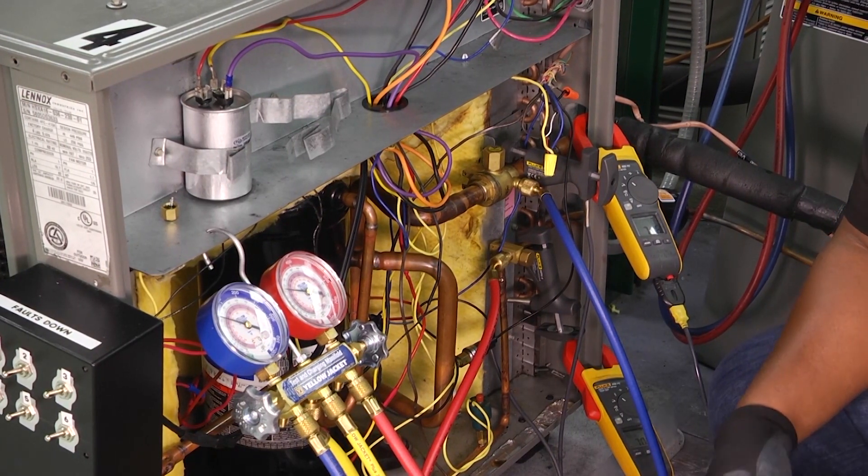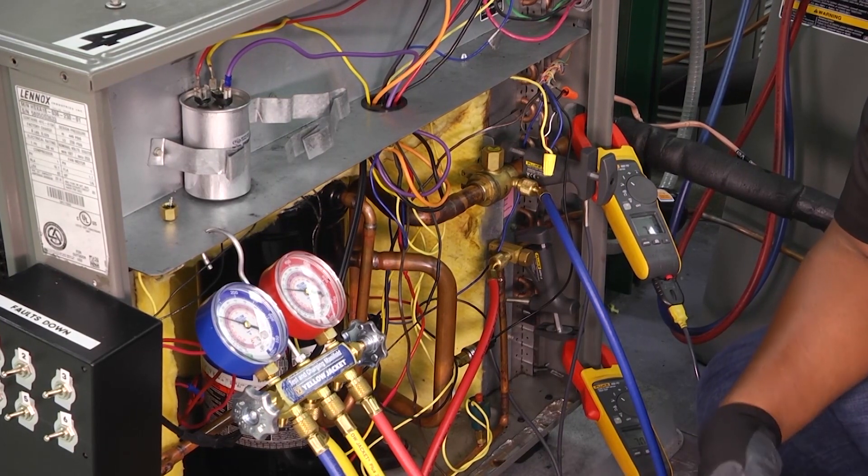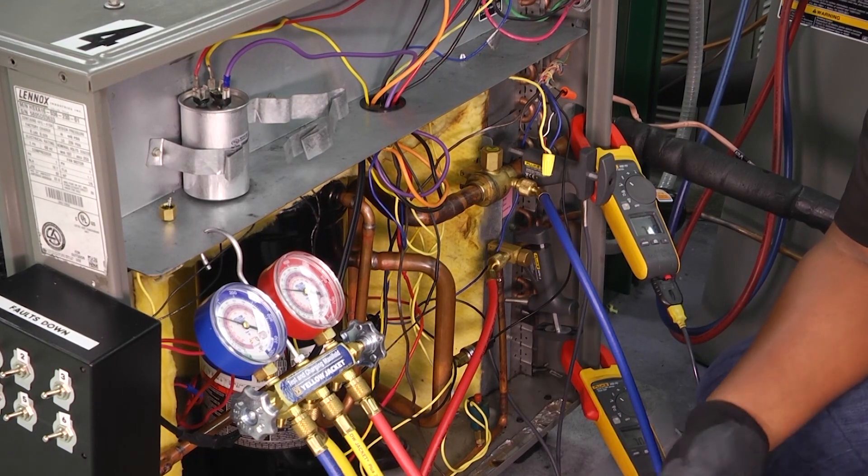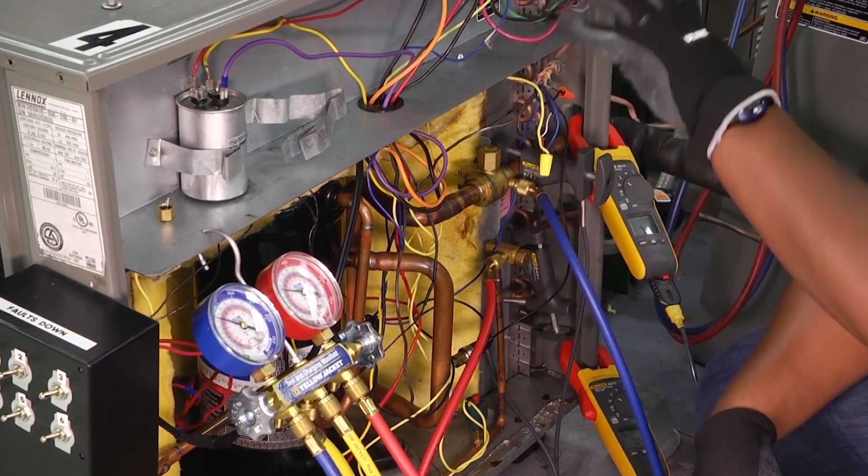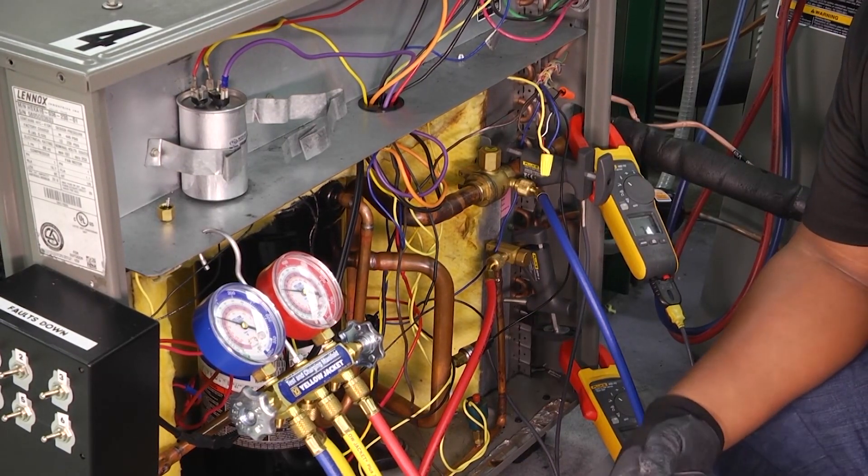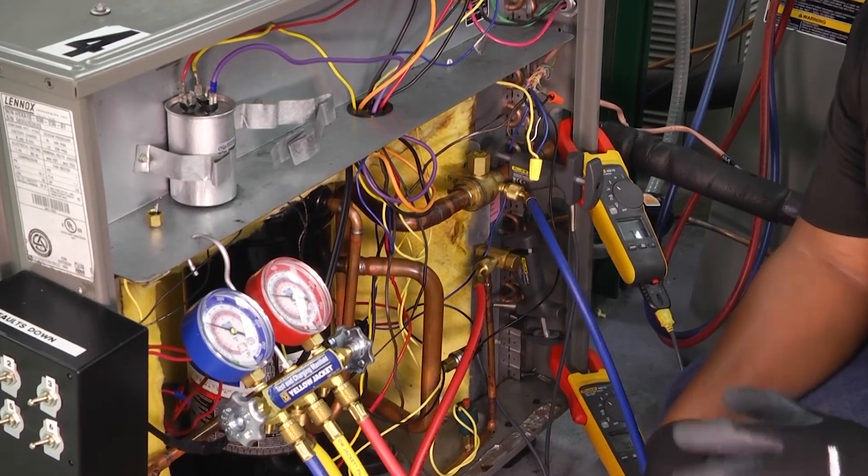In very simple terms, the easiest way to remember it is superheat is nothing more than heat added to a vapor. We know that inside of our evaporator coil, that is where heat is absorbed into the refrigerant. And then we know conversely that in our condenser coil, heat is rejected from the refrigerant.